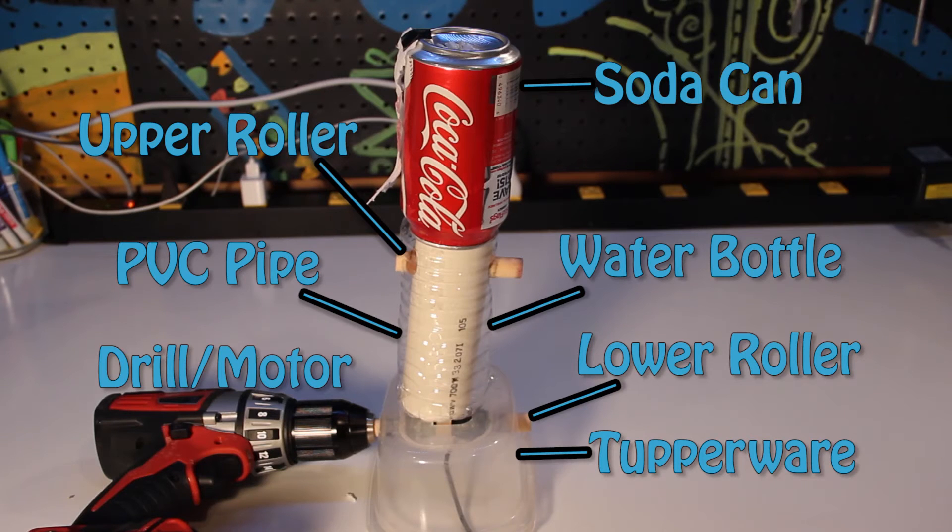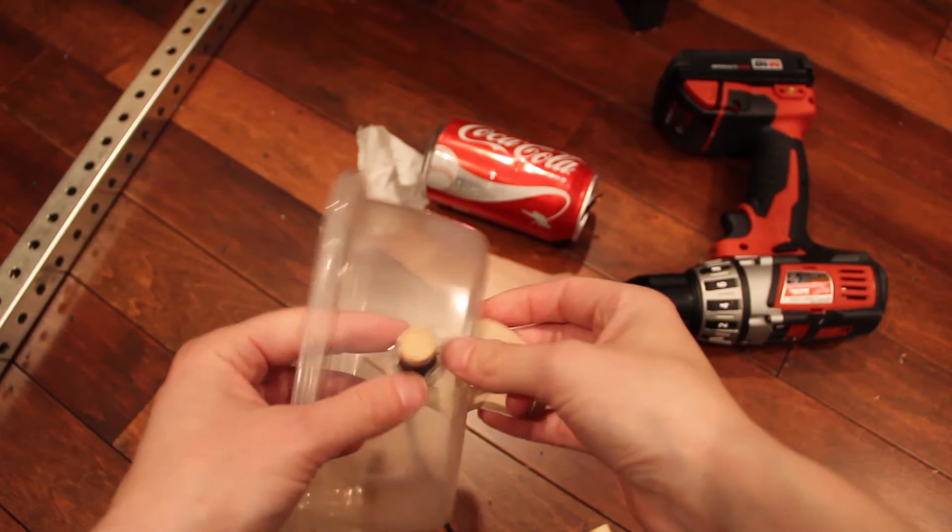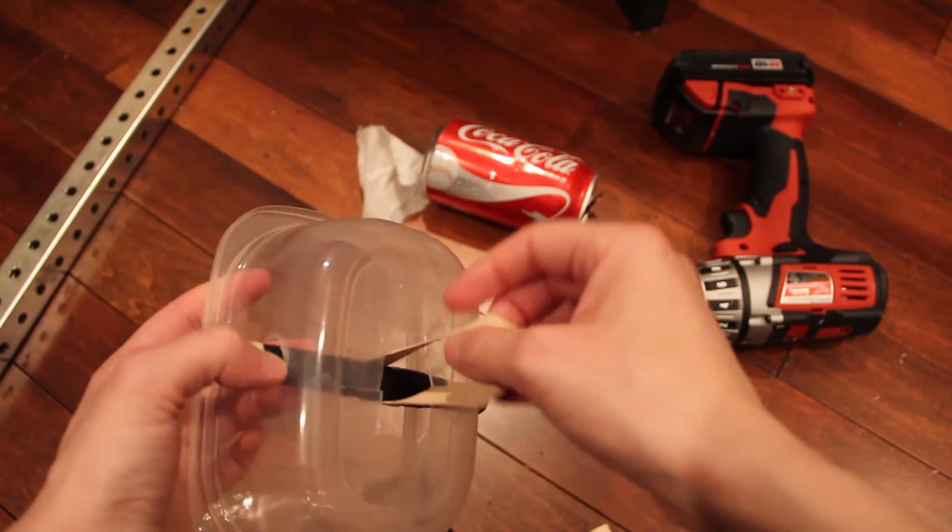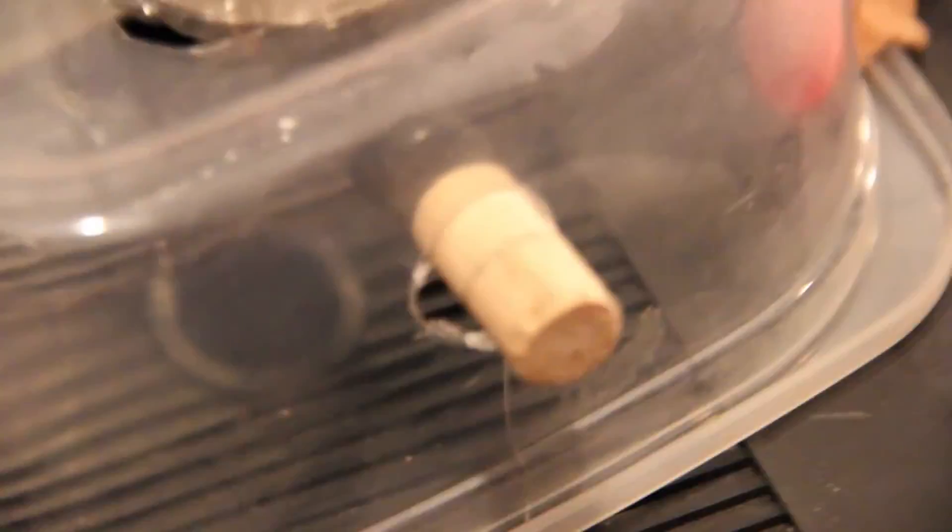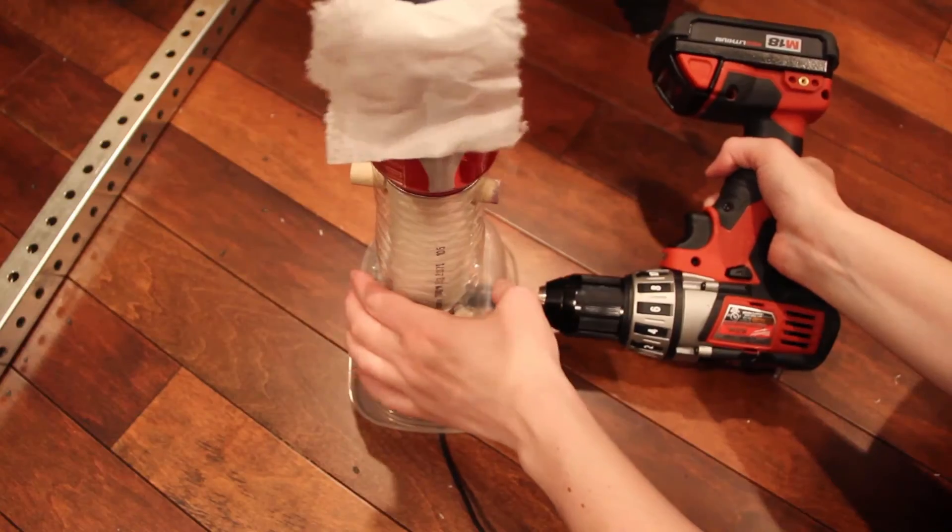To make this, you are going to need a plastic Tupperware container. You need to cut a hole in the top for the rubber band to fit through, but not so big that the PVC pipe has nowhere to stand. Drill or cut a hole in the sides of the Tupperware container for the lower roller to go.